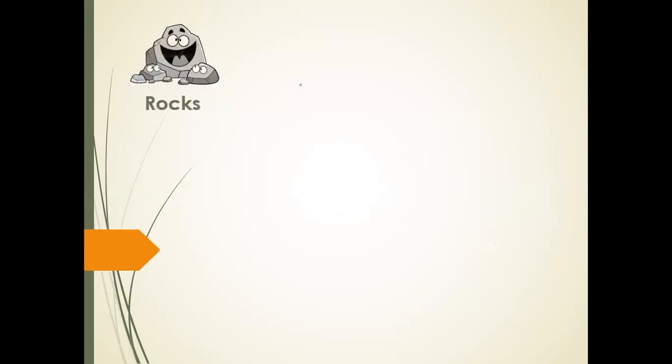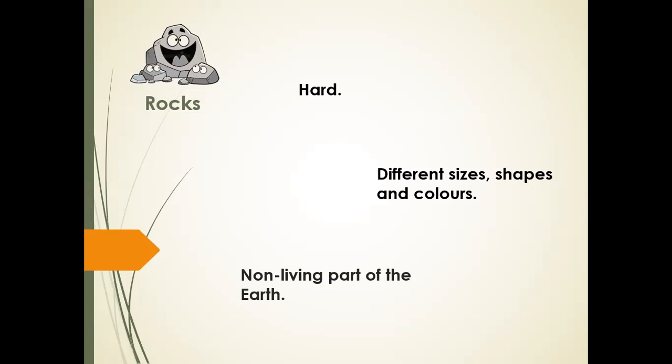So what are rocks? Rocks are hard, and they have different sizes, shapes, and colors. You will find rocks that are big, small, or medium in size — rectangular, circular, or roughly shaped. Some have a gray color, some have a brown color. Rocks are a non-living part of the earth, meaning they can't eat, breathe, drink, or reproduce.